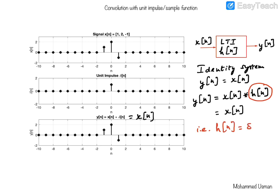So h of n is equal to the unit sample function delta of n. We see that for an identity system the impulse response happens to be the impulse itself, and that should be the case — the impulse response is nothing but the output of the LTI system when the input is a unit sample delta of n. So when the input is delta of n, the output also has to be delta of n for it to be an identity system. This gives us the relationship that anything convolved with the unit sample function results in itself, which means the unit sample function is the identity for the convolution operation.